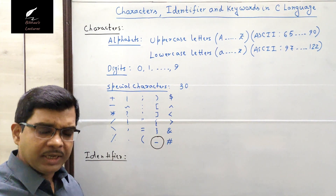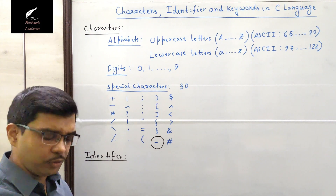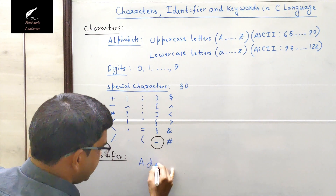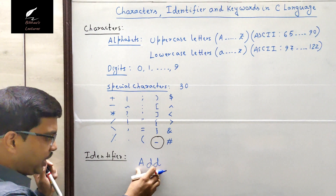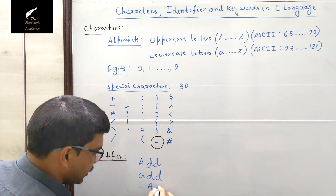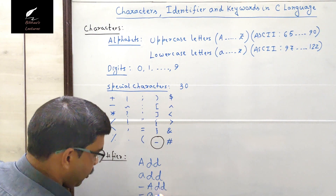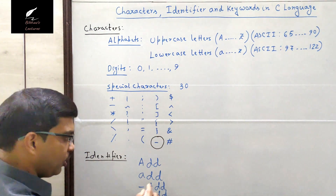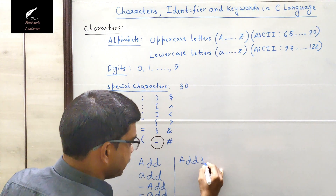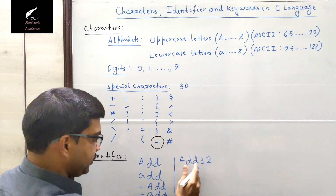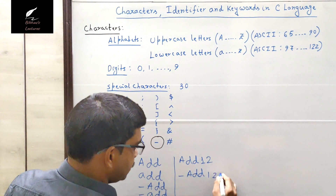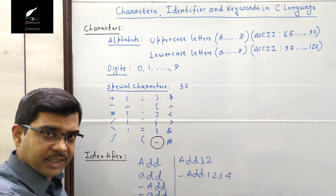An identifier is basically a kind of variable name. For example, capital A, DD, add — these are valid identifier names. An identifier can start with a capital letter, a small letter, or an underscore symbol, so all of them are valid identifier names. You can also add digits after letters, like add1, add12, add123, add1234 — all of these are valid identifier names.